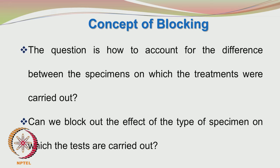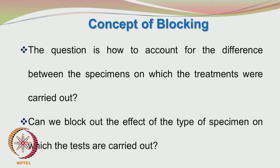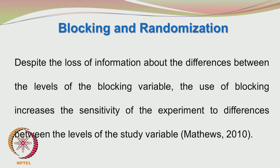In blocking, we try to answer the question of how to account for the difference between the specimens on which the treatments were carried out. We carry out different tests on a particular specimen, which is then used up, and then we do the same tests on a second specimen. The first specimen may be different from the second, so the first specimen is a block and the second specimen is also a block. We are accounting for the variability due to the two different specimens, blocking out the effect of the type of specimen on which the tests were carried out.